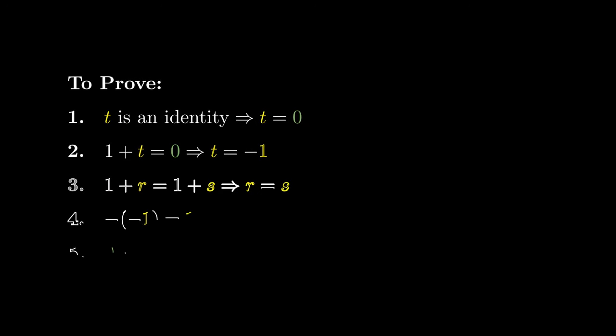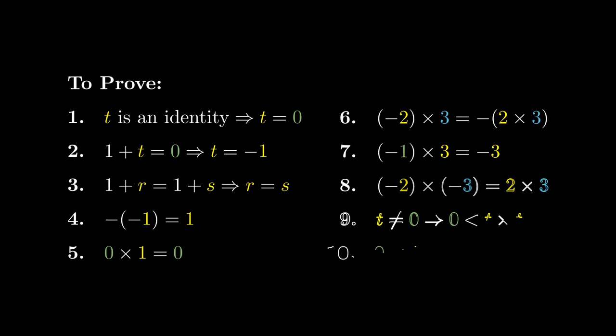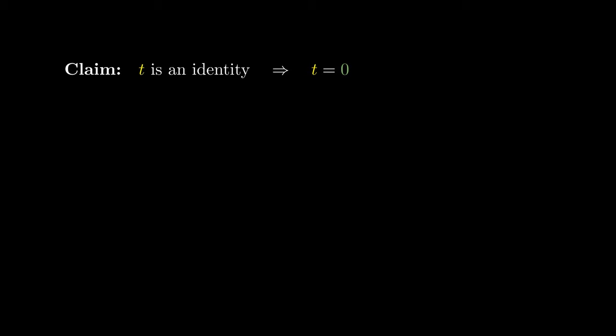Before you are 10 equations or results that you probably have already seen in high school mathematics. These results seem relatively obvious, but actually take a little bit of effort to prove using techniques in abstract algebra. Pause the video if you'd like to try to prove these results on your own. We're going to look at our first claim, which says that if the integer t is an identity, then t must equal the integer 0.